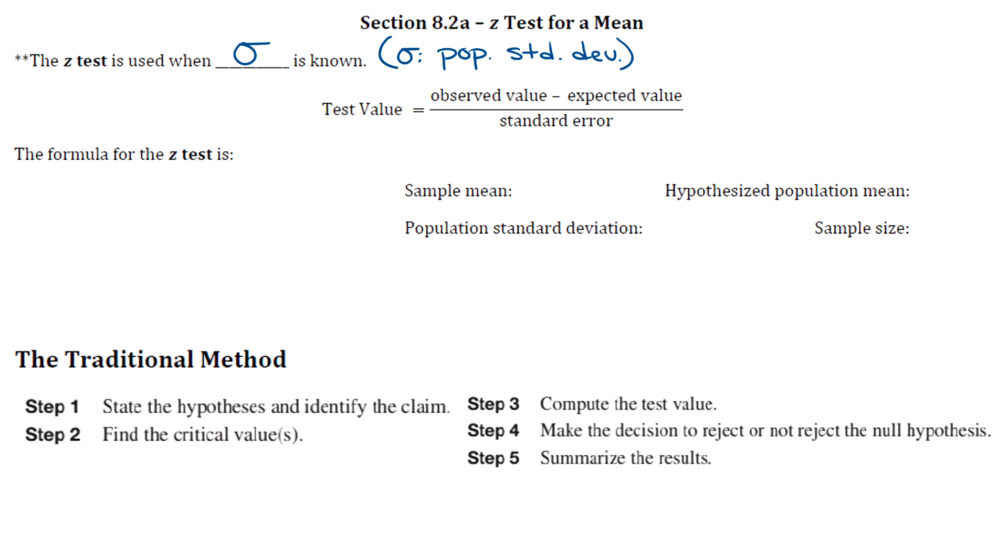In every hypothesis test, we're going to have to find a test value to compare with the critical value. Every test value formula is different, but in general, it's the observed value minus the expected value over the standard error. Specifically, the test value formula for the Z test is z equals x bar minus mu all over sigma divided by the square root of n. You definitely want to keep that formula near you when you're doing these problems.